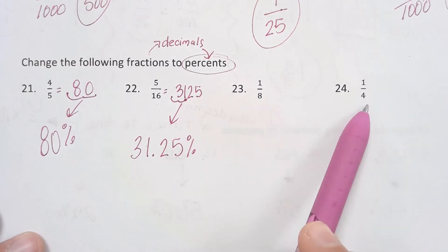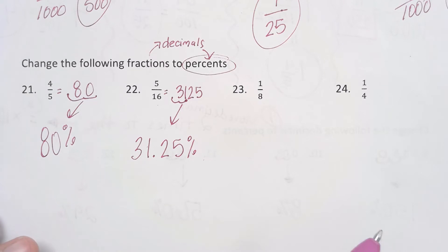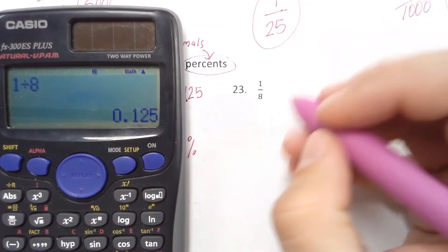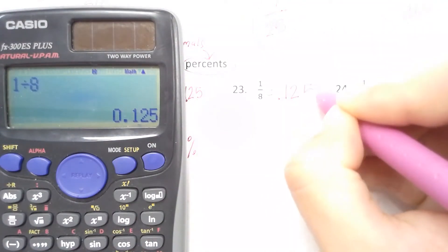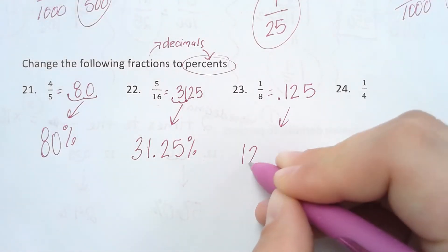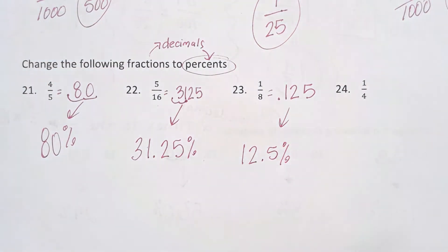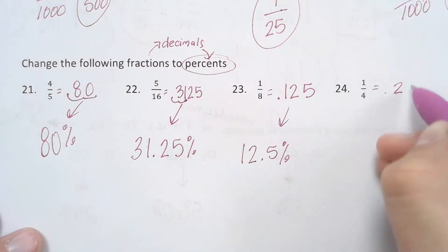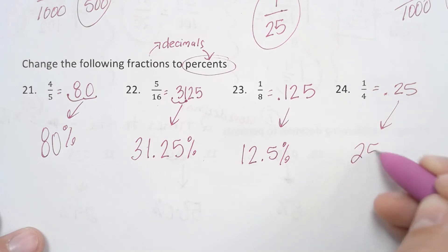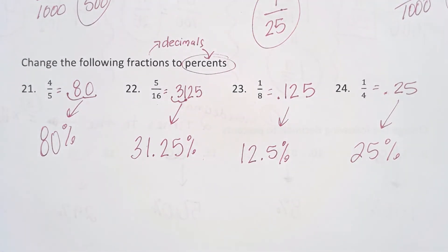You guys pause the video, go ahead and try 23 and 24, and then press play when you're ready for the answers. For number 23, the first thing I would have done was take 1 divided by 8, which gives 0.125. Then to change it to a percent, move it two times to the right or multiply times 100 — you should have gotten 12.5%. For number 24, when you took 1 divided by 4, you got 0.25. Then to change it to a percent, move it two times to the right or multiply times 100 — you should have gotten 25%.